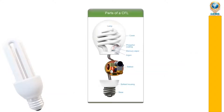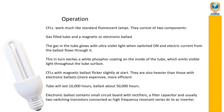There are two kinds of CFL bulb structures — one is helical, and another is the folded tube type. Inside there is a phosphor coating, and also mercury vapor and argon gas. There is also a ballast circuit at the base, where some electronic components are present.